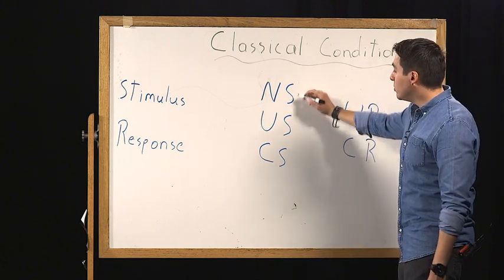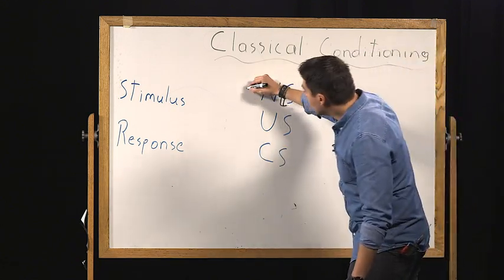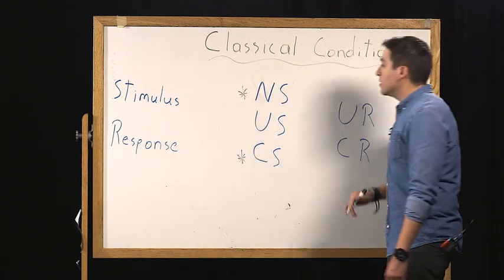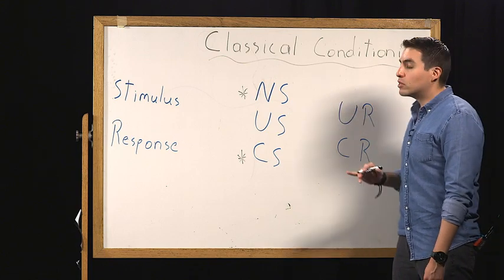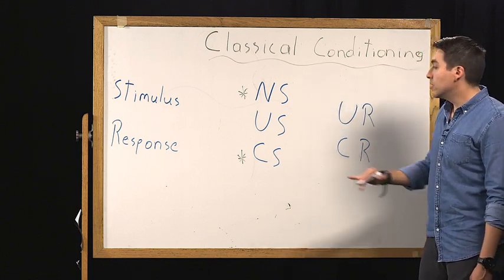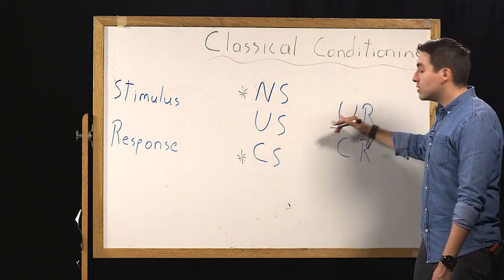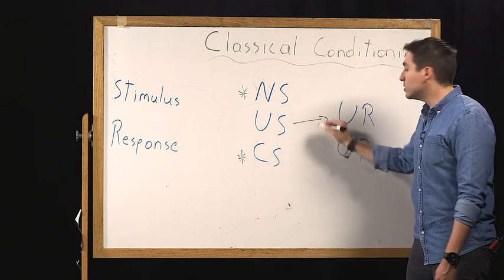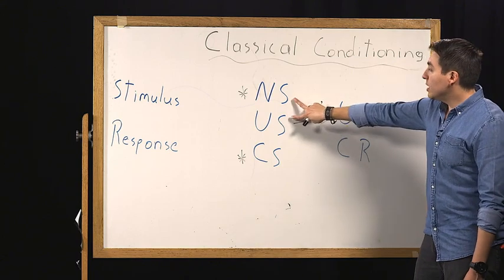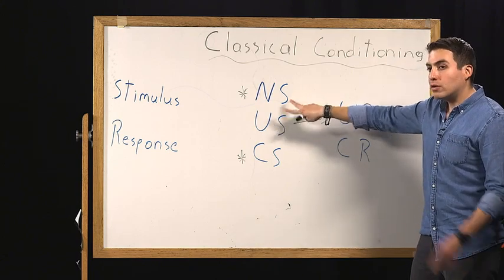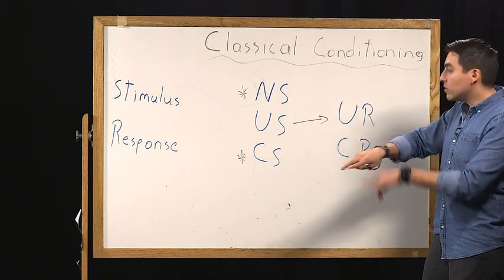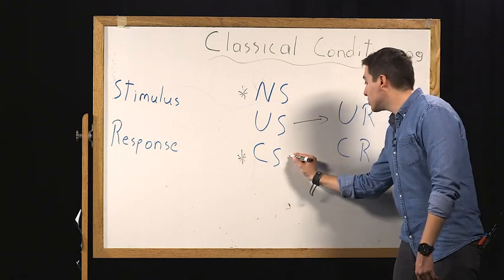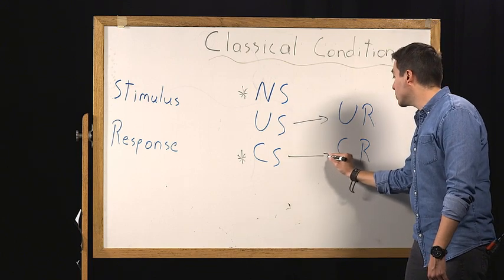Neutral stimulus and conditioned stimulus in essence are the same thing. The difference is initially the neutral is not creating any kind of response. What creates a response is an unconditioned stimulus. Natural stimulus creates a natural response. If those two are paired together often in time, what was initially neutral becomes conditioned and the conditioned stimulus leads to a conditioned response.